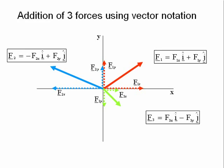Notice that the x component of F2 is negative because it is directed along the negative x axis, and the y component of F3 is also negative because it is directed along the negative y axis.